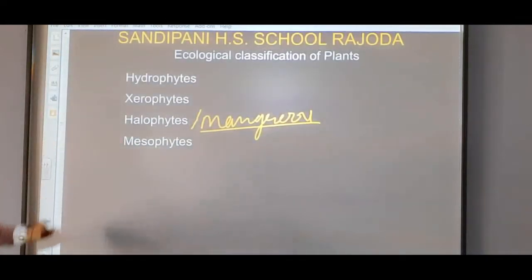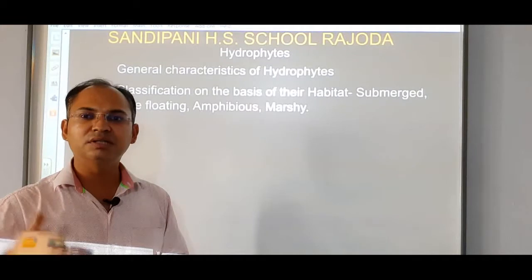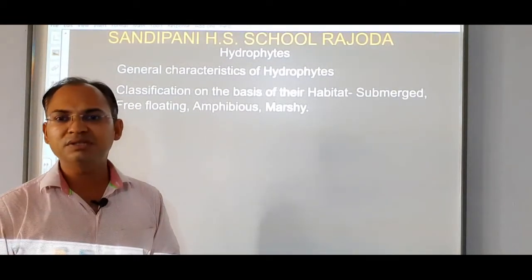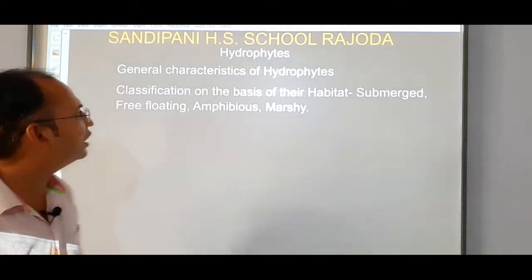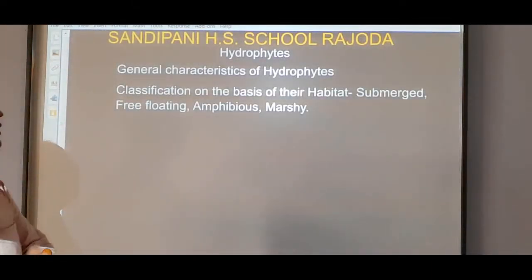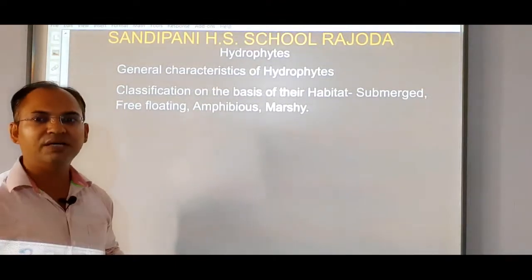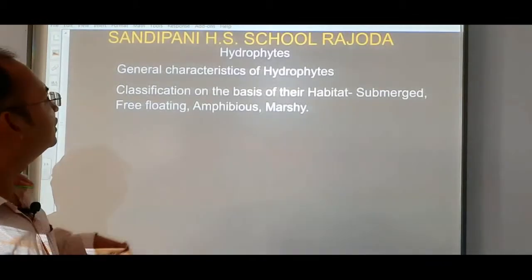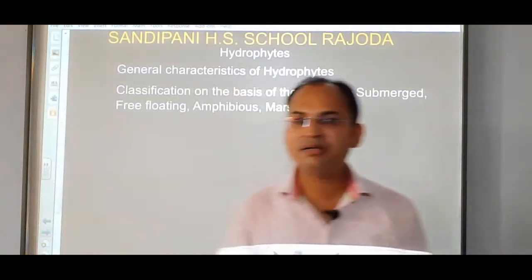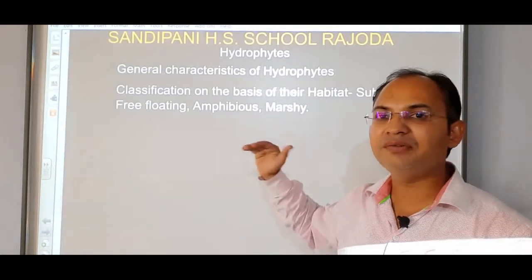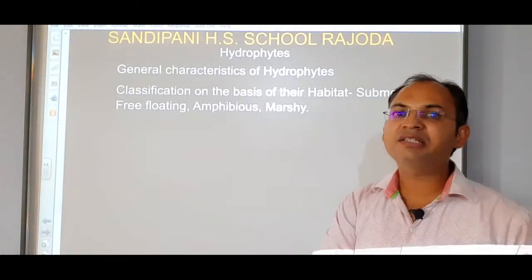Let us start with hydrophytes. Hydrophytes are also known as aquatic plants because they grow in abundant availability of water — in mud, water, ponds, lakes, seas, etc., wherever there is abundance of water. Regarding hydrophytes, we will study their general characteristics, the difference between hydrophytes, xerophytes, halophytes, etc., and then we will see the classification of hydrophytes as well.